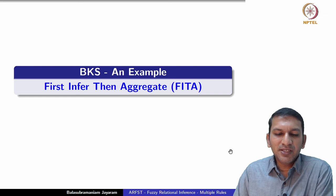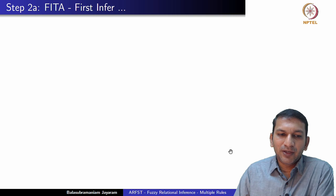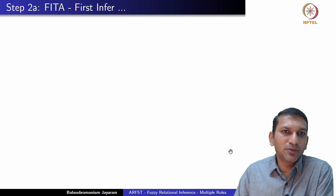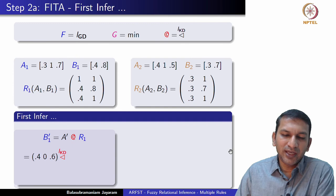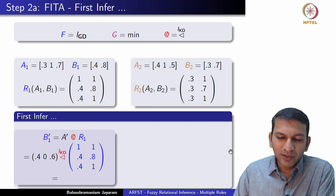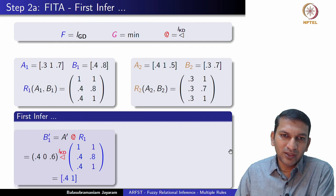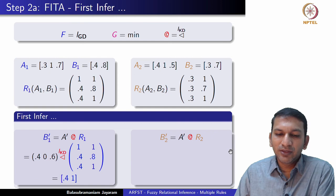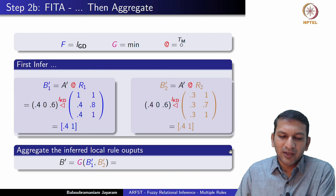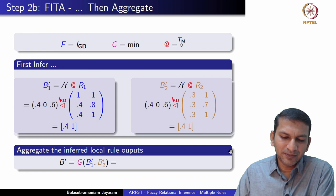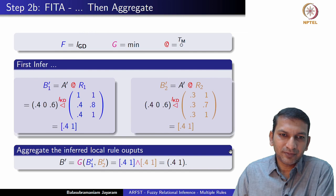Now applying BKS with the Theta (FITA) strategy to the same system. Using the inf-I composition with the Łukasiewicz implication on each rule separately: B1′ = A′ ∘ R1 gives the vector [0.4, 1], and B2′ = A′ ∘ R2 also gives [0.4, 1]. In the second step, we aggregate these local outputs B1′ and B2′ using the min operation. Since both vectors are identical, the final aggregated output is B′ = [0.4, 1].